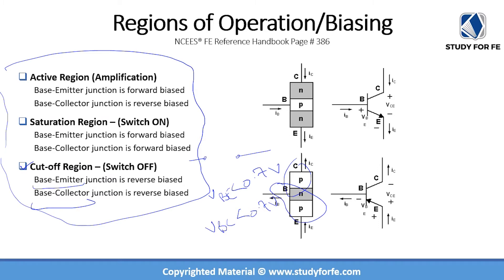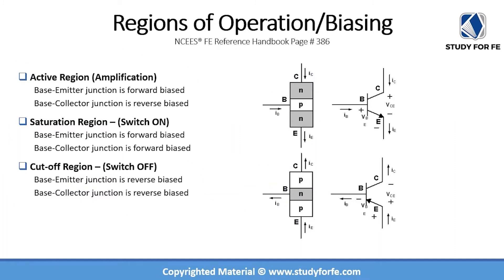We could discuss what happens physically in amplification mode or saturation mode in the context of energy bands, but that is outside the scope of the FE exam. It is important to realize that depending on how you set the voltages across these junctions, your transistor may or may not be in one of these modes. The biasing determines whether your transistor will do amplification or act as a switch on or switch off.